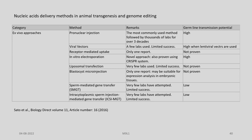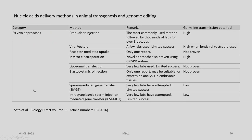One of the important critical aspects in animal transgenesis and genomic editing is the delivery methods. We can categorize them into three groups. The ex vivo approaches include methods like pro-nuclear injection, viral vectors, receptor-mediated uptake, in vitro electroporation, liposomal transfection, blastocyte micro-injection, sperm-mediated gene transfer, and intracytoplasmic sperm injection mediated gene transfer.